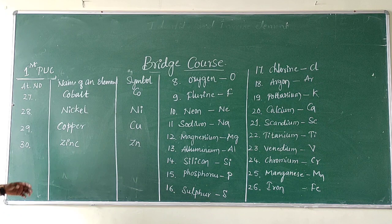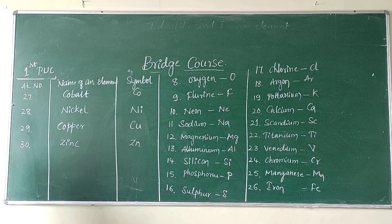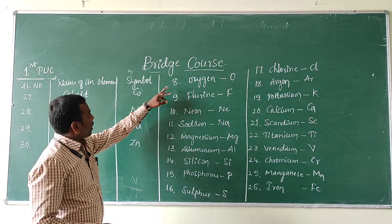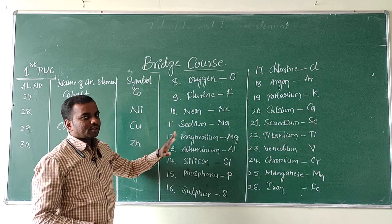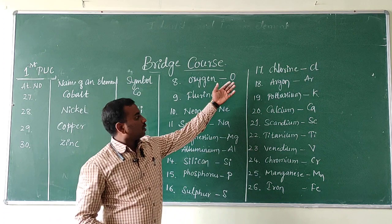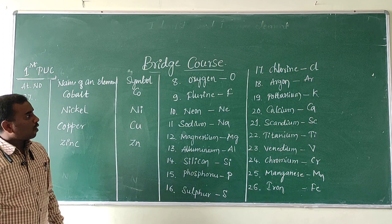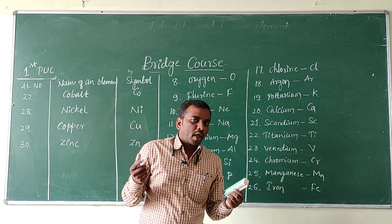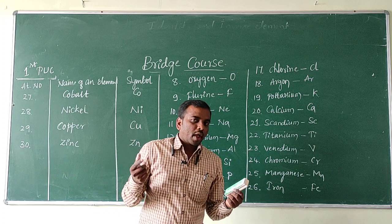These are some symbolic representations of elements. These are the most important elements from 1 to 30. Symbol means the abbreviation used for the naming of elements — the name of elements. This term is called as symbol.